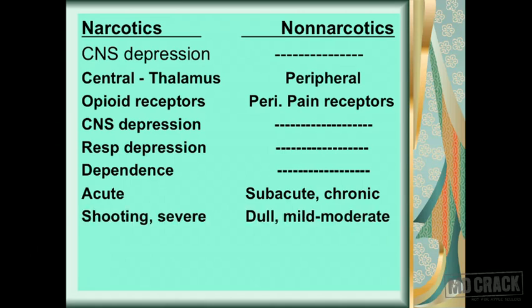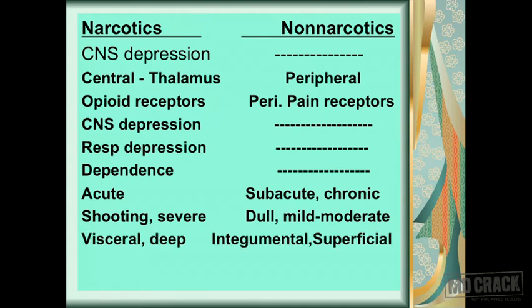When the pain is shooting, severe, and excruciating, narcotic analgesics are extremely useful, whereas non-narcotics can handle dull and mild to moderate pain. Narcotics also relieve visceral and deep-seated pain, whereas non-narcotics are mainly useful against integumental pain — pain arising from integumental structures adjacent to the skin.